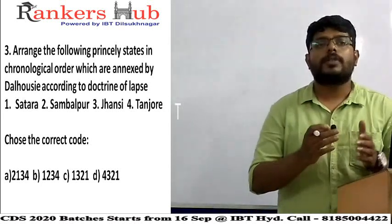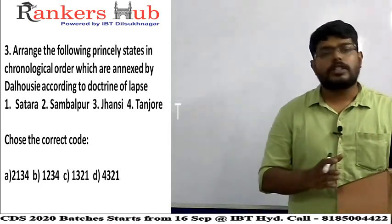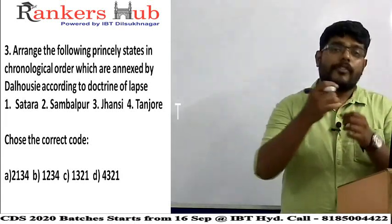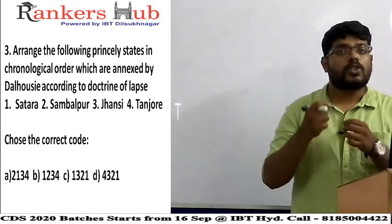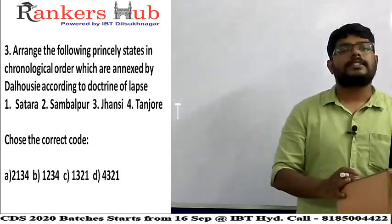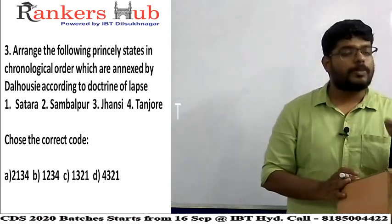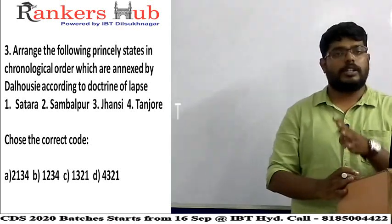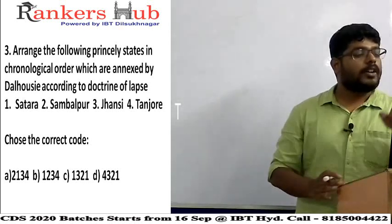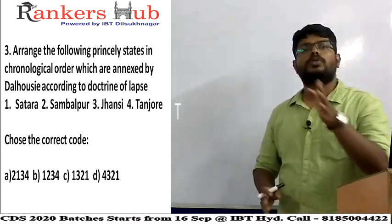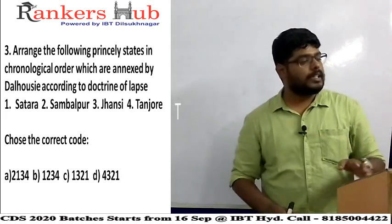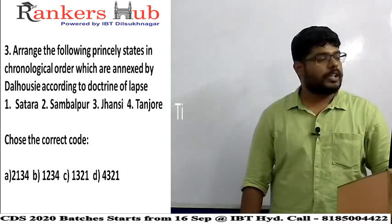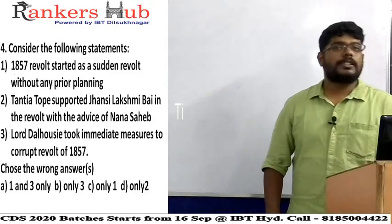All four princely states were annexed by Dalhousie on the basis of the Doctrine of Lapse because these states did not have a legal heir. In chronological order: first Satara was annexed, second Sambalpur, third Jhansi, and fourth Thanjavur — that is order 1, 2, 3, 4. So the correct answer is B.